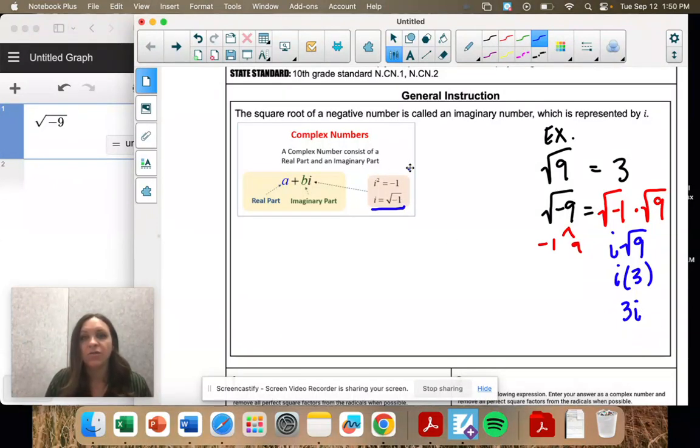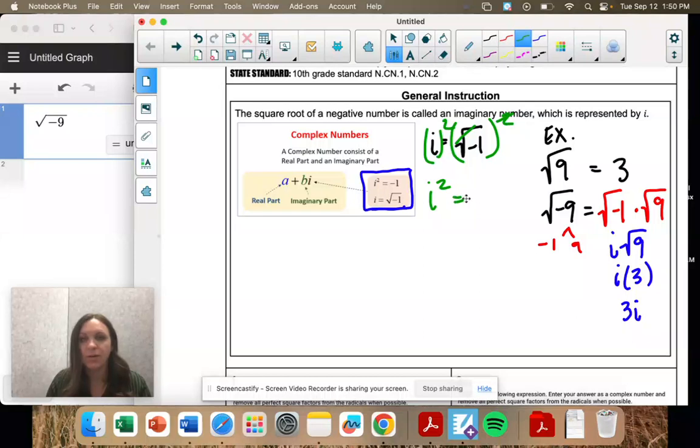So these are really important. i squared is negative 1, because if I have i equals the square root of negative 1, what happens if I square both sides? I have i squared, and then the square root cancels out with the square. So that's why i squared equals negative 1.